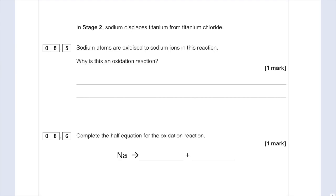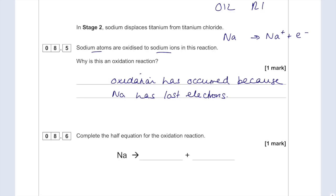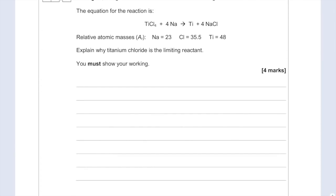Sodium atoms are oxidized to sodium ions in this reaction. Why is this an oxidation reaction? To go from an atom to a positively charged ion, it must have lost electrons. Remember OIL RIG: oxidation is loss of electrons, reduction is gain. Complete the half equation for the oxidation reaction: Na → Na⁺ + e⁻.